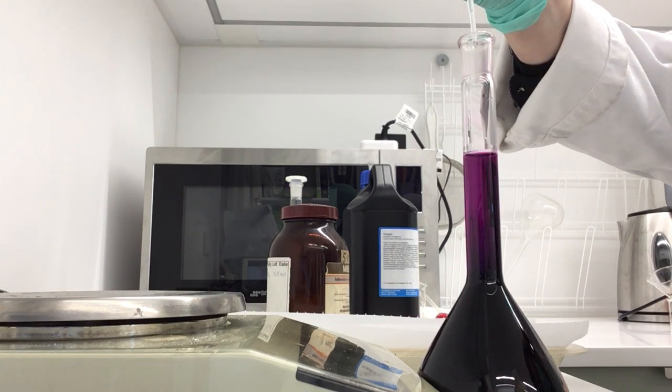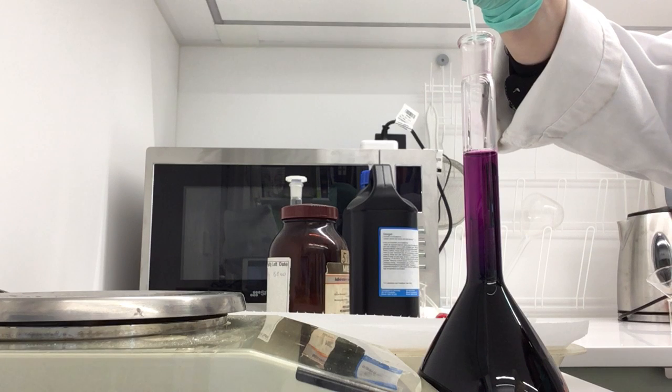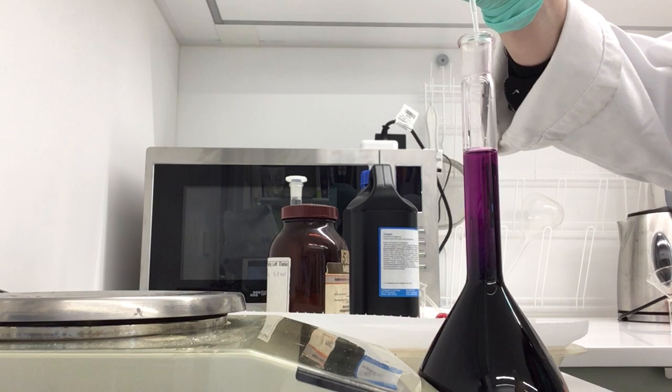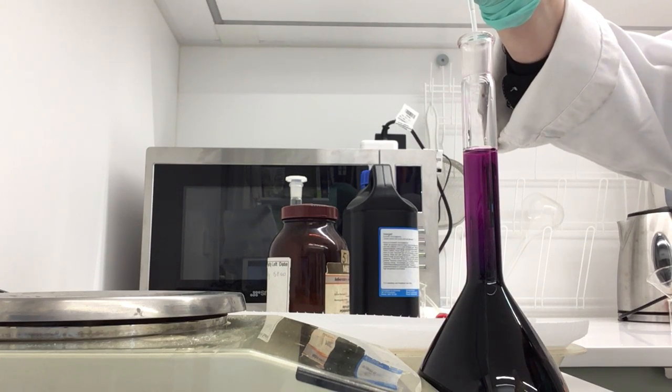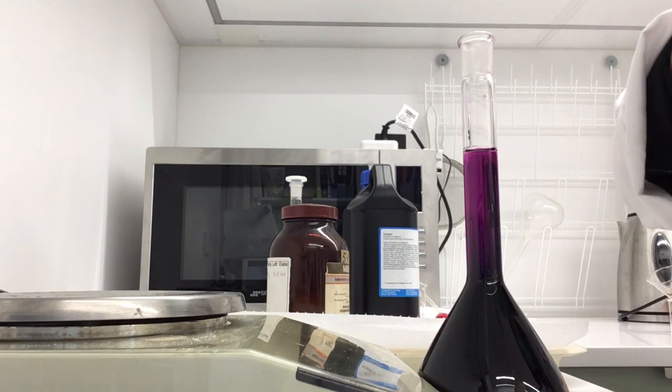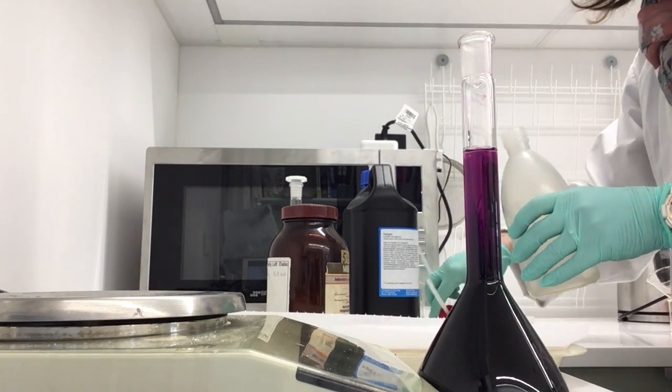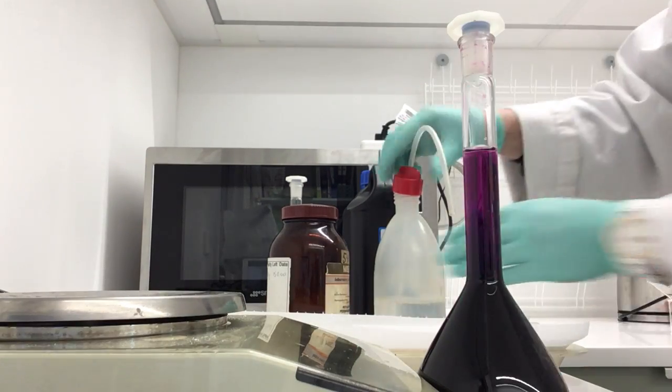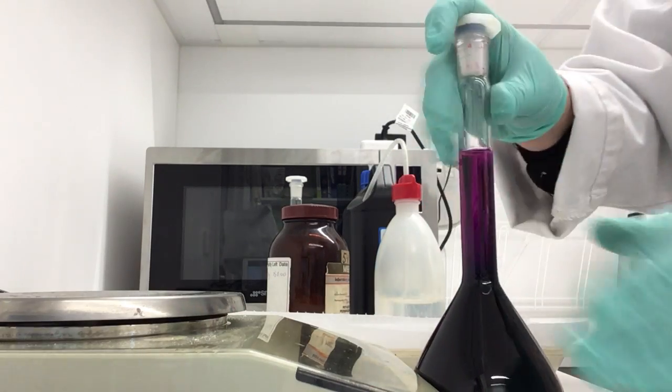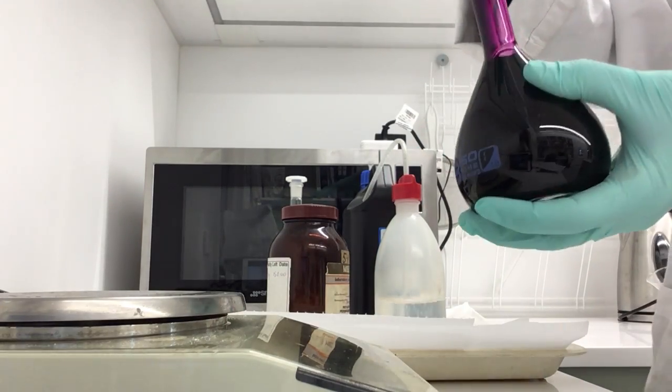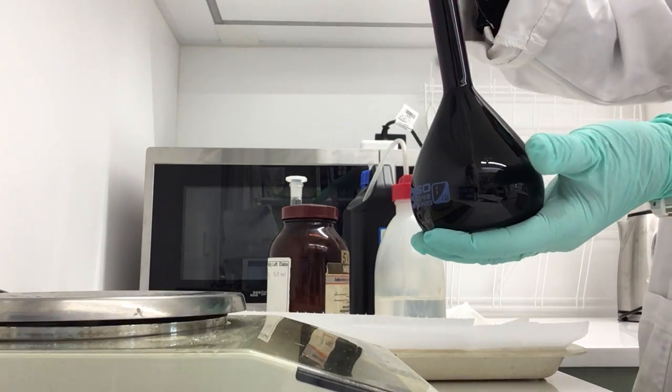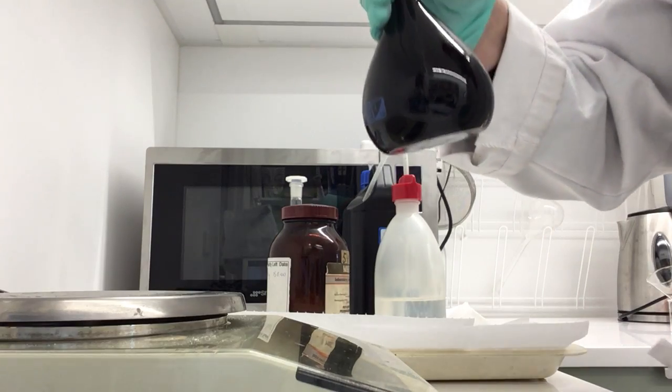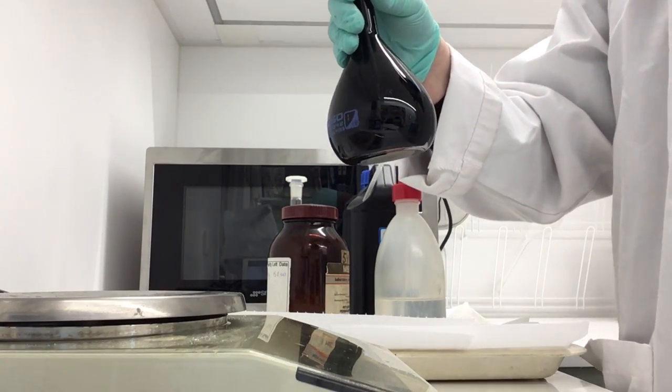Line on the flask that is, so that we know that we get the exact concentration that we're after. Okay, give that a last little mix, and that's our standard 0.02 molar potassium permanganate solution.